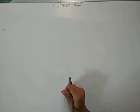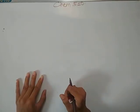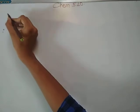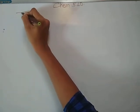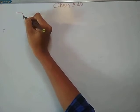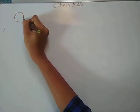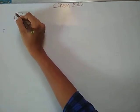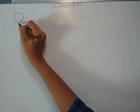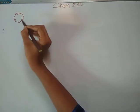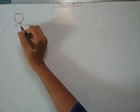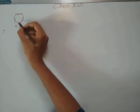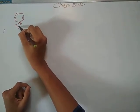This is a very important example for university exams and set exams also. So let's start the video. Firstly, what is the structure of cycloheptatriene? It is a seven-membered ring with alternating double bonds — one, two, three, four, five, six, seven — so this is the cycloheptatrienyl cation having six pi electrons.